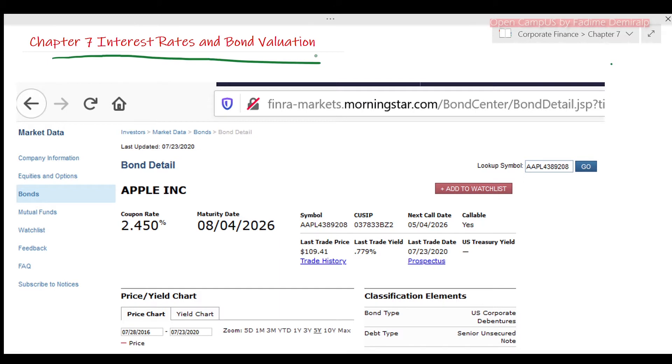Remember, in Chapter 6 Part 4 video, I showed you how I made up the example of Apple borrowing money. We visited FINRA to find information on this Apple-issued bond. I will put the link down below in description again. You can use this website to get market information.